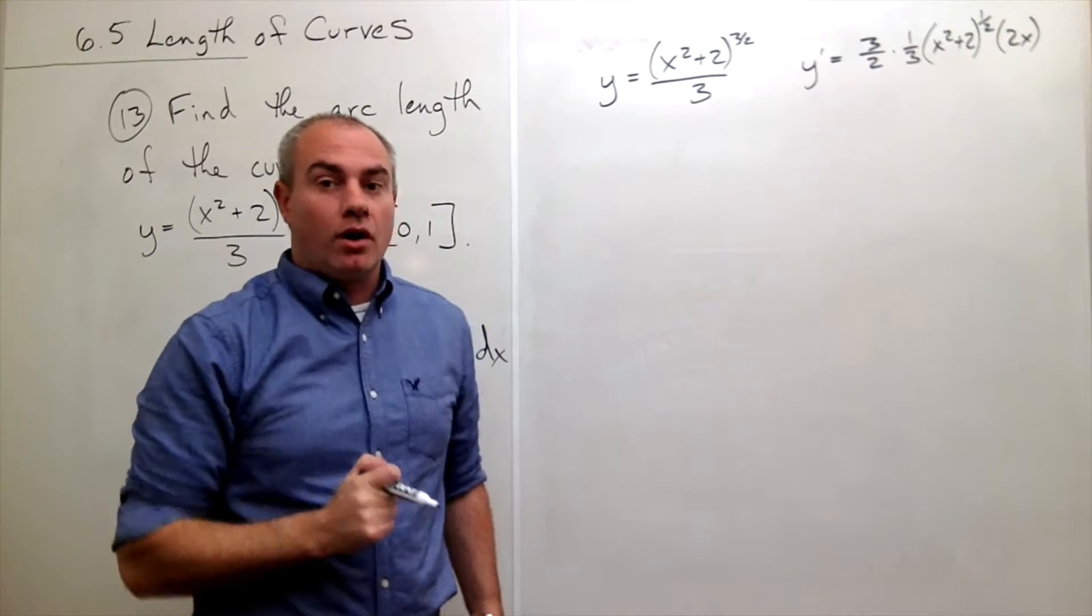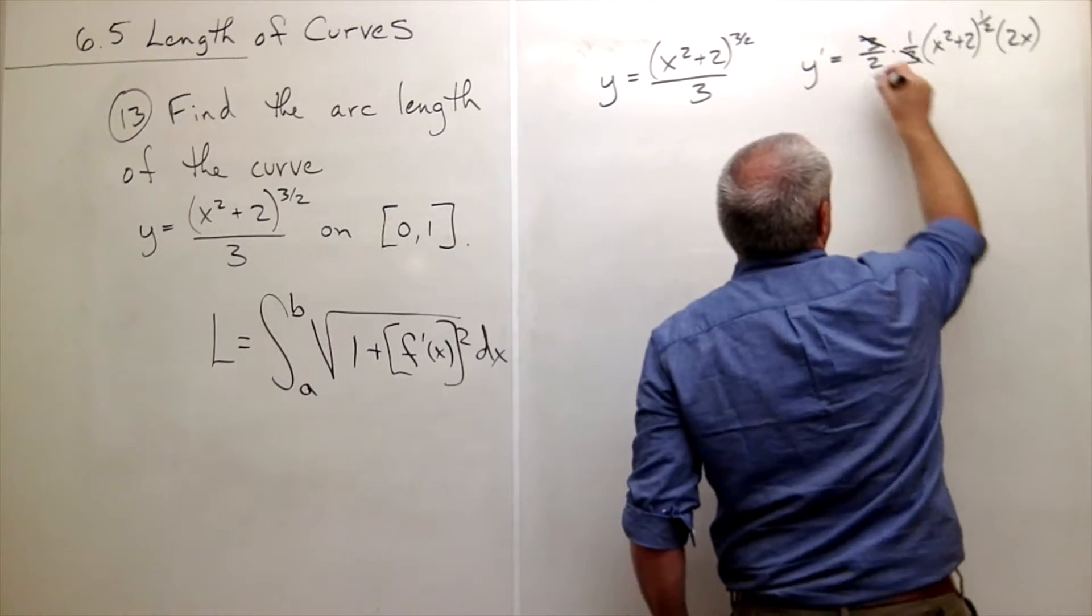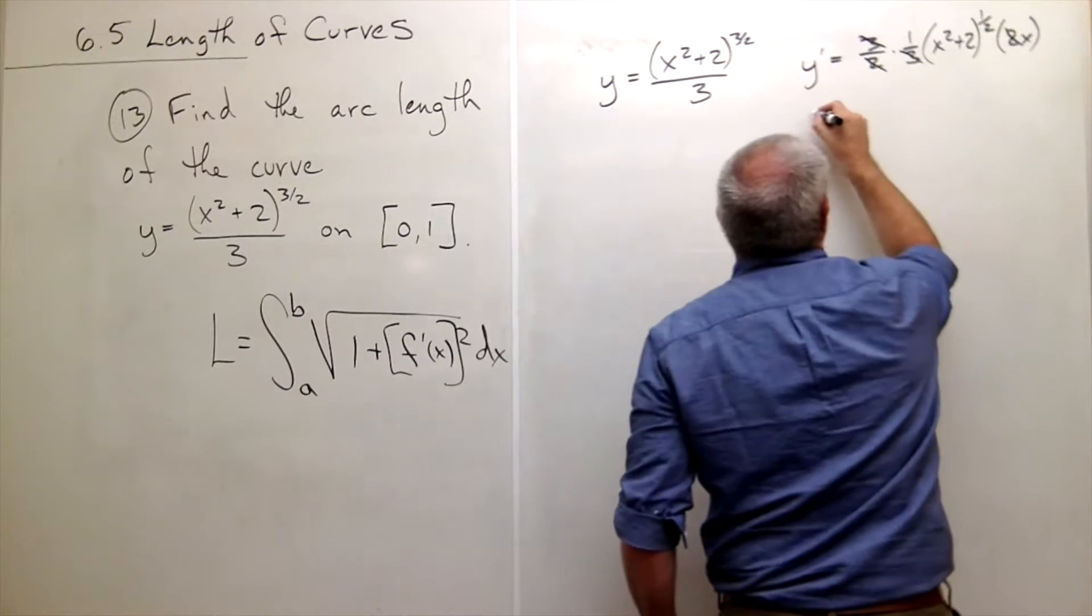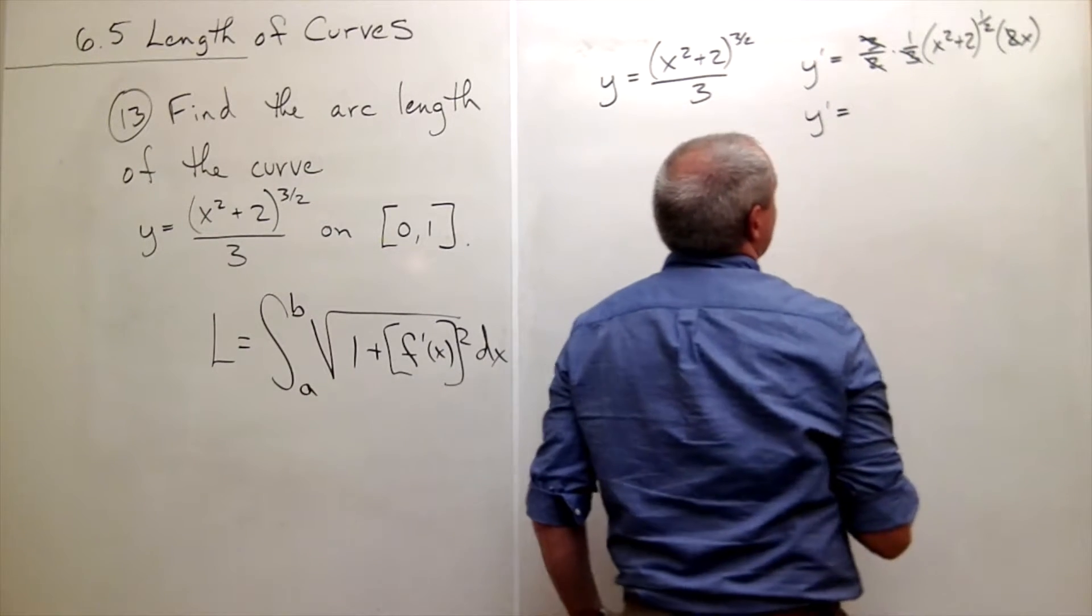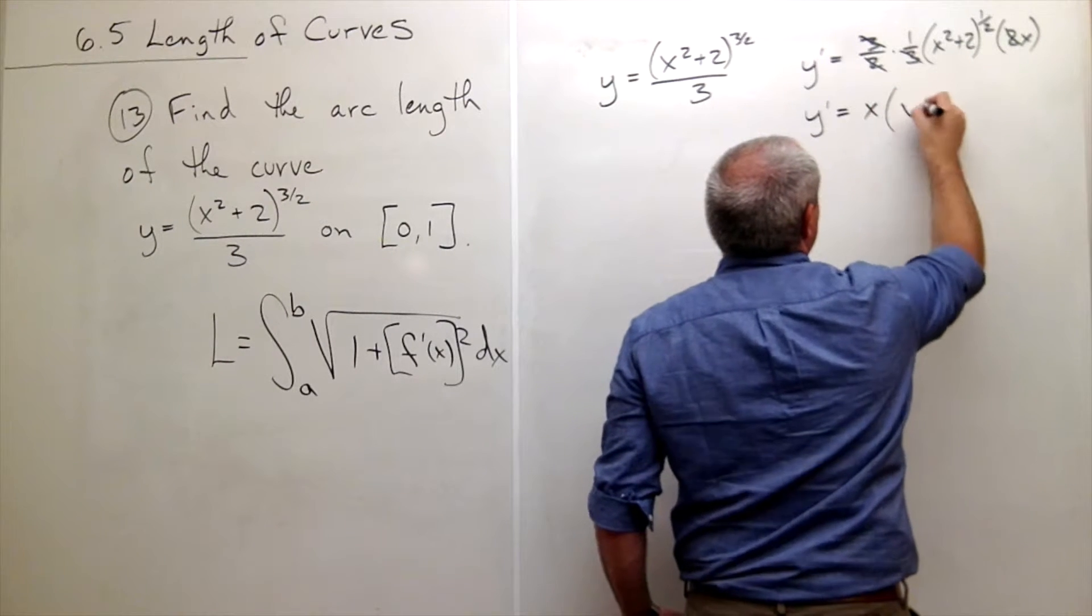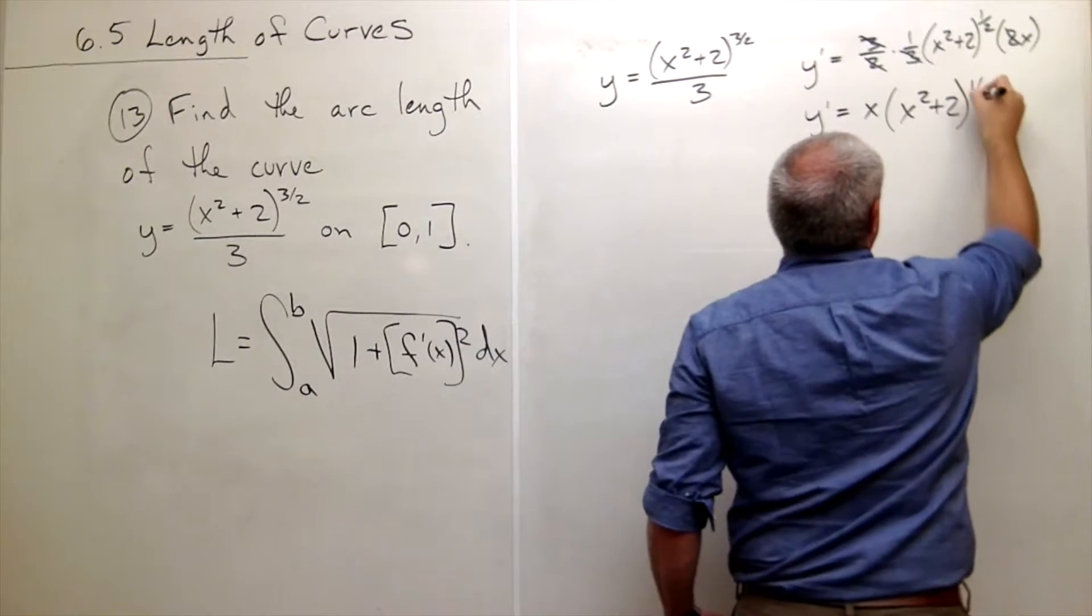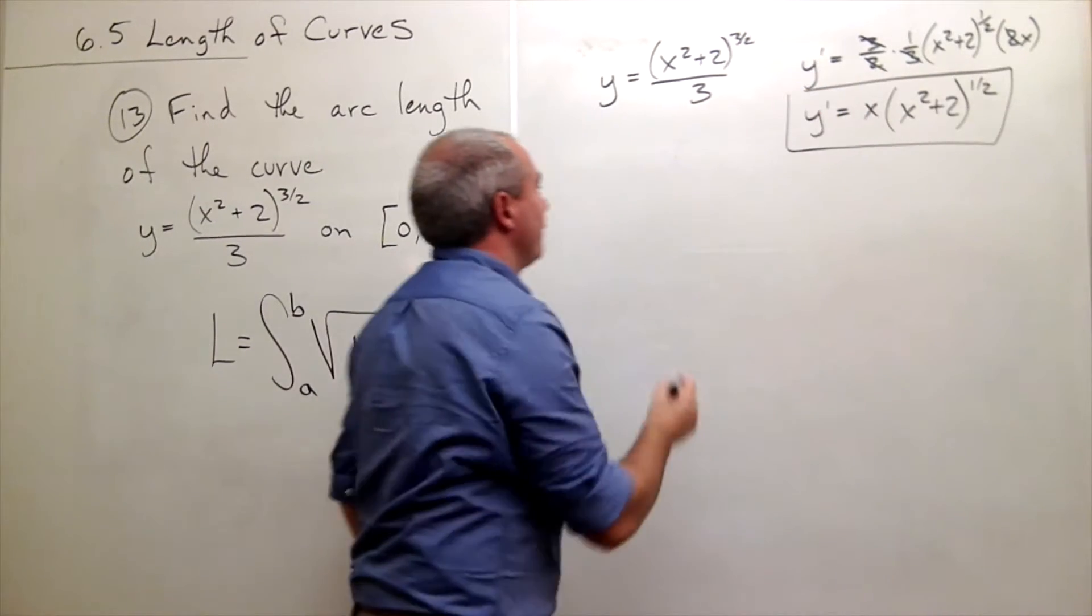Alright, all that together, we see that the 3's cancel, the 2's cancel, and I'm just left with y prime is equal to x times x squared plus 2 to the 1 half. Okay, so we've got our derivative.